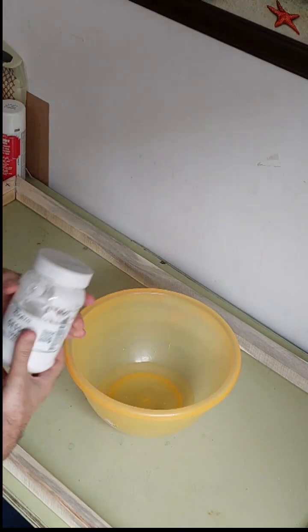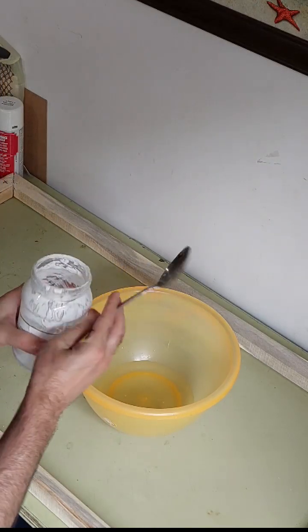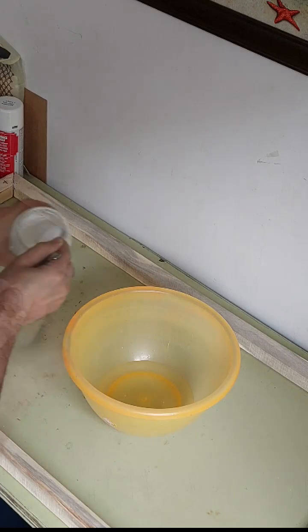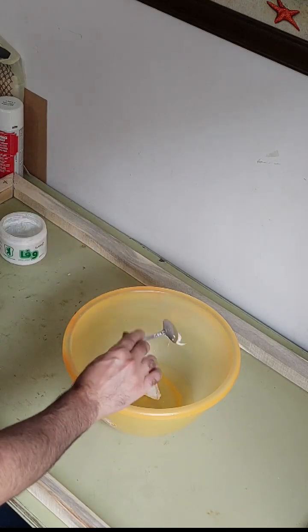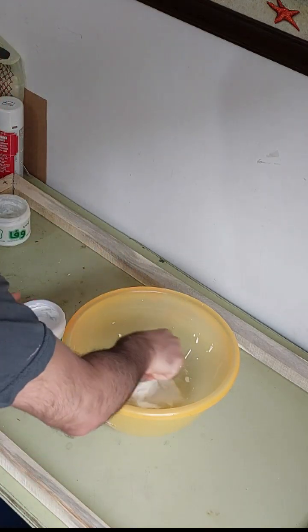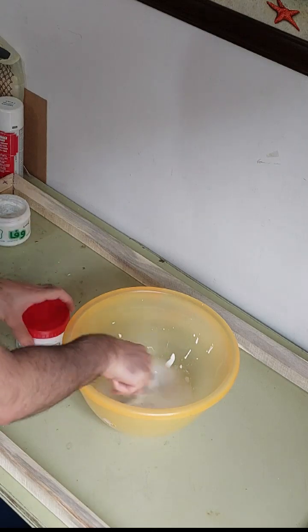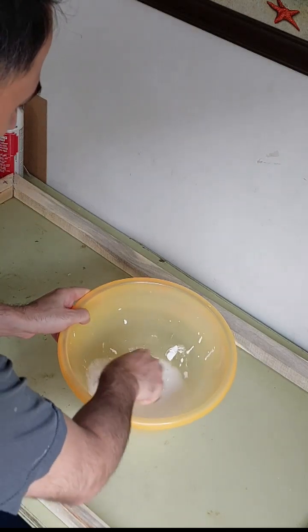To start, pour a small amount of water in a container and mix some gesso with it. You can also use wood glue instead of gesso. I use a combination of both of them. Mix them with water until smooth and uniform.